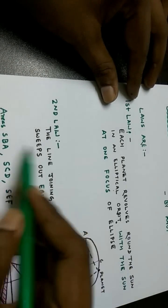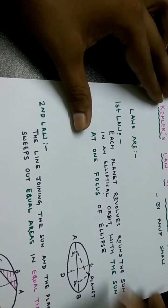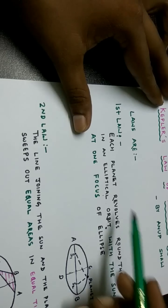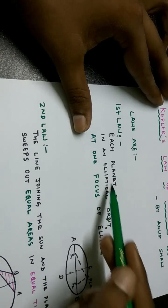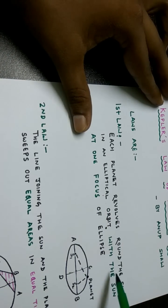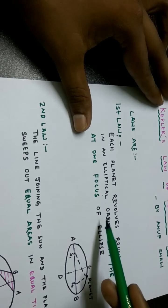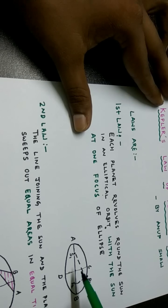I am going to discuss each law one by one. The first law states that each planet revolves around the Sun in an elliptical orbit with the Sun at one focus of the ellipse. This is a picture of an ellipse, and here there are two foci — one is S1 and the other is S2.